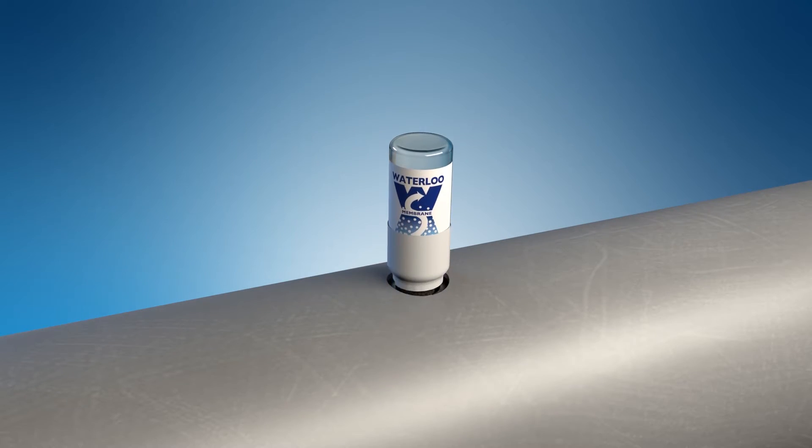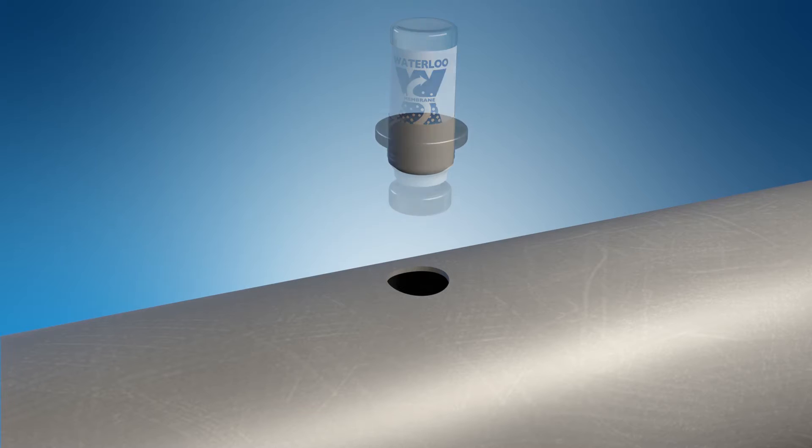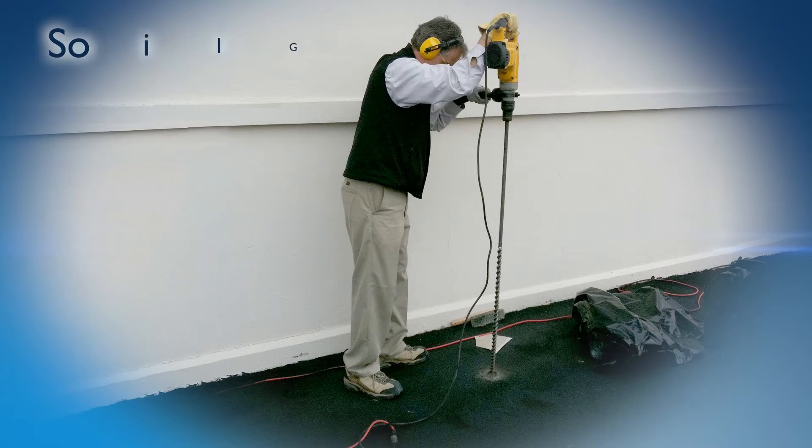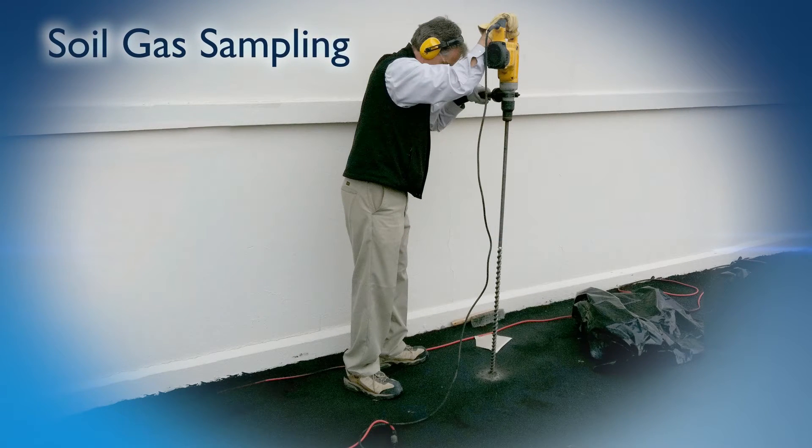If multiple sampling events are desired, the hole in the PVC pipe can be sealed with a stopper after sampling. Soil gas sampling requires additional steps that are outlined in a separate video.